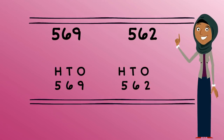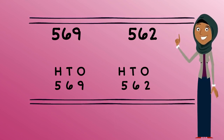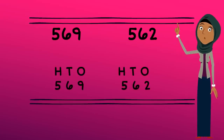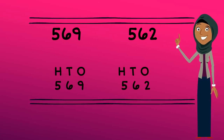Let's have a look at another example: 569 and 562. We need to label each digit according to their value. In 569, we have 5 hundredths, 6 tenths, and 9 ones. And number 562 has 5 hundredths, 6 tenths, and 2 ones.